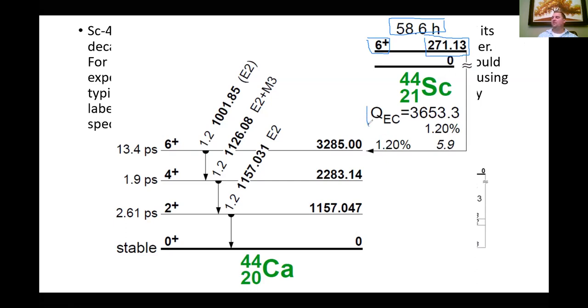We have the Q value for the electron capture of this metastable state decay, and we have a percentage here. This metastable isomer of scandium-44 only decays through electron capture 1.2% of the time. We can see it only has one specific decay to one specific nuclear state of its daughter product, the calcium-44.